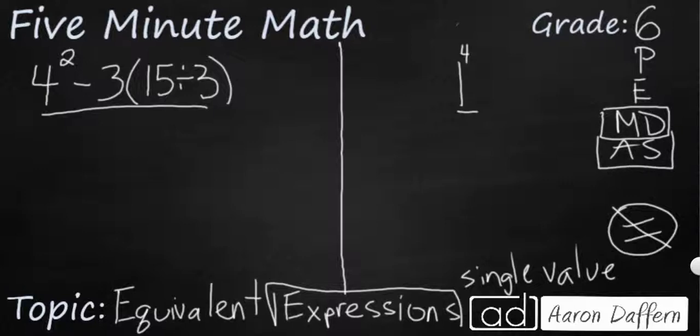So let's start over here on the left. We have 4 squared minus 3 parenthesis 15 divided by 3. Well, we start with our parenthesis first. So I am going to rewrite this here: 4 squared minus 3, and I am going to resolve this 15 divided by 3. So that is just going to be 5.